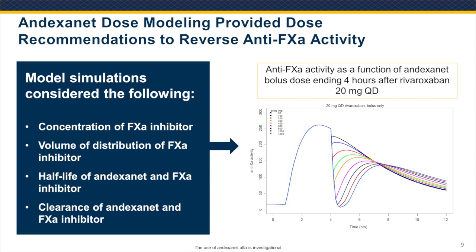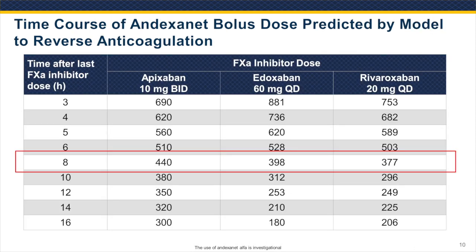These mathematical equations describing the relationship were assembled, and the model was used to simulate different doses of andexanet that will decrease anti-factor Xa activity for each of the factor Xa inhibitors at different times after administration and at different dose levels. This is illustrated with rivaroxaban anti-factor Xa activity being decreased by different bolus doses of andexanet. At different times after each of the factor Xa inhibitors, the bolus dose of andexanet required to reverse anticoagulation decreases concurrent with the elimination of the factor Xa inhibitor, such that by eight hours after administration you only need about 400 mg of andexanet for each inhibitor.